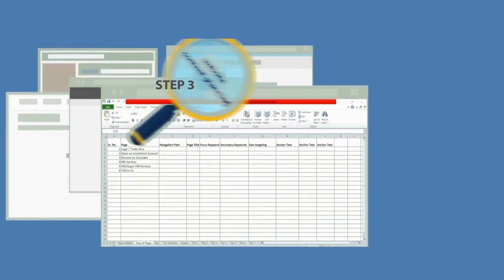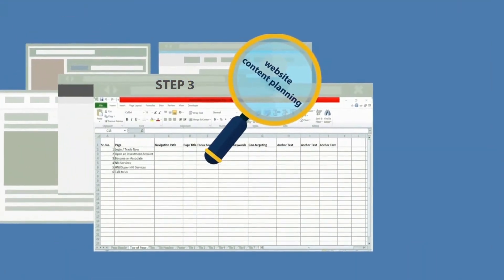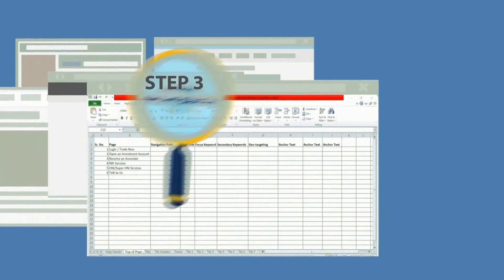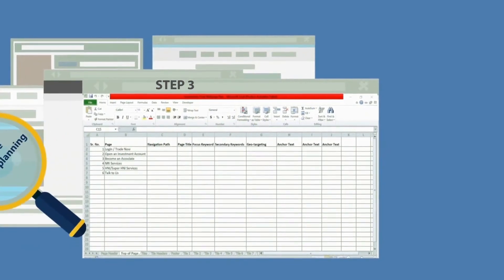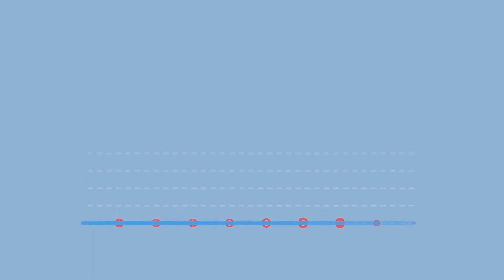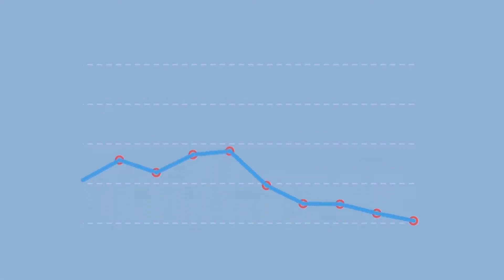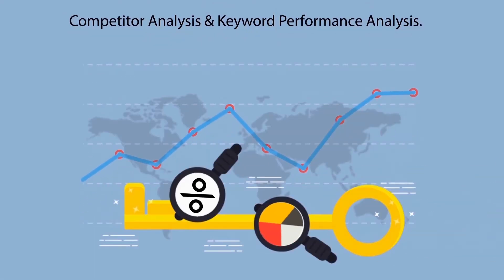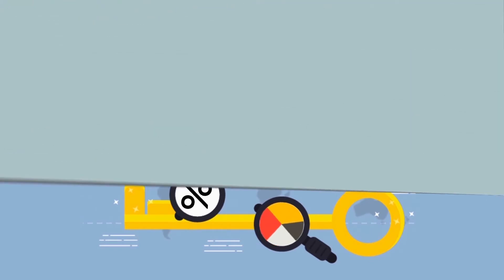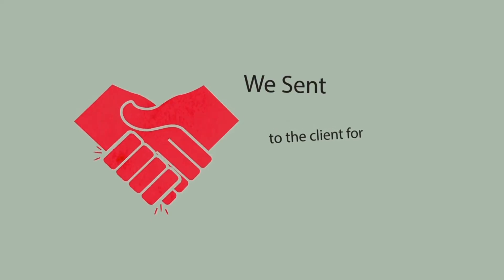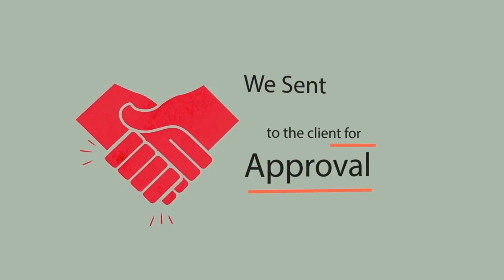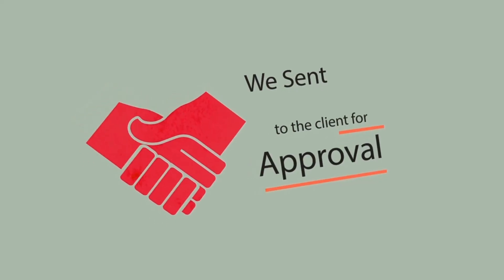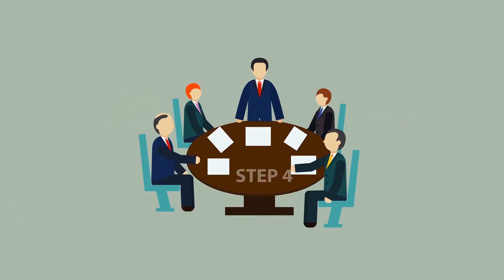Step 3: Website content planning. We create the list of pages after conducting thorough competitor analysis and keyword performance analysis. The content plan prepared with this mechanism is then sent to the client for approval.